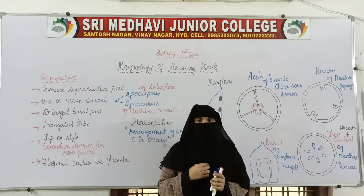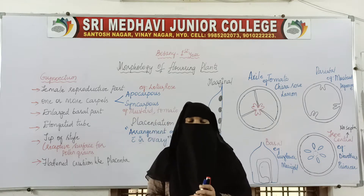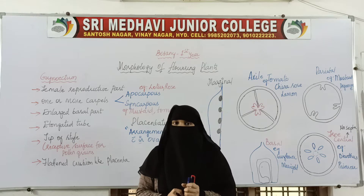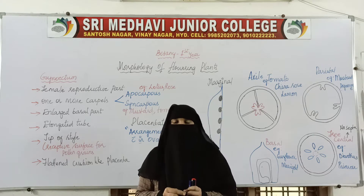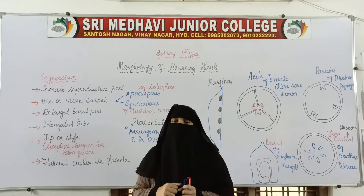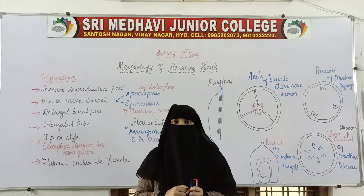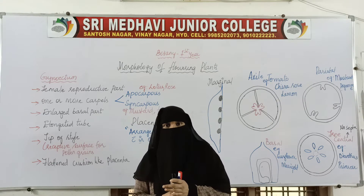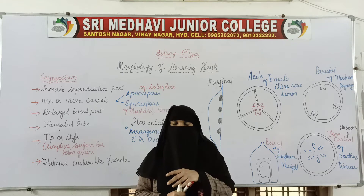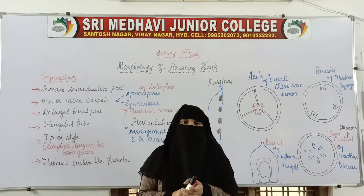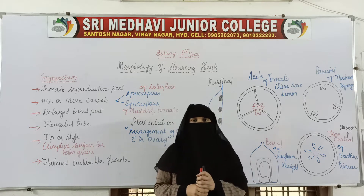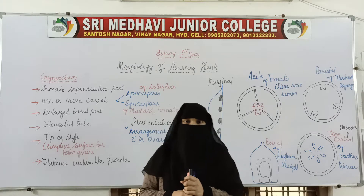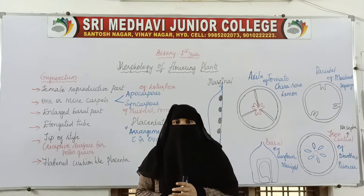The androecium is comprised of stamens. Each stamen has two parts: a tube-like structure called the filament, and on top of it a head-like structure called the anther. The anther is bilobed — two lobes are present — and inside those lobes, sac-like structures are present which produce pollen grains.